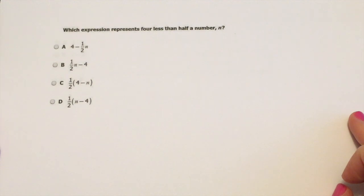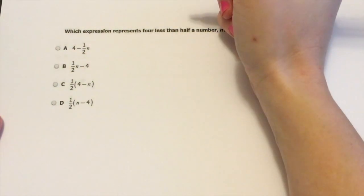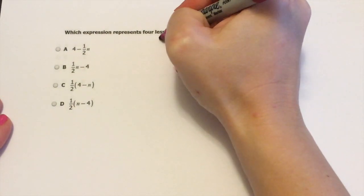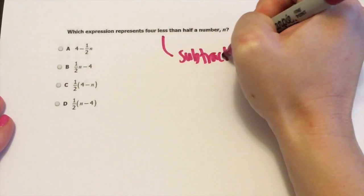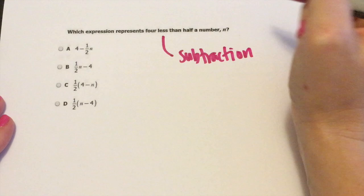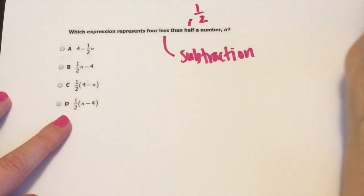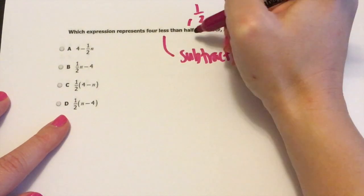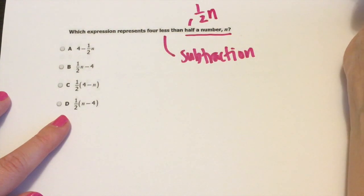Which expression represents four less than half a number? So what I want to do here is go through and identify some words here. So we know less is going to be subtraction. And then half we see here, we're going to go ahead and abbreviate that half a number, half a number. When this is half a number.